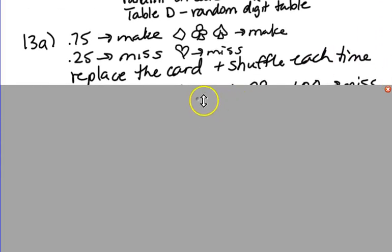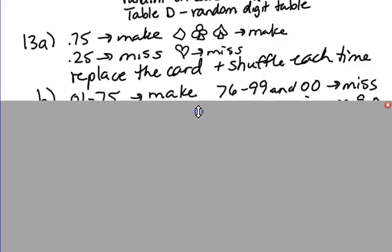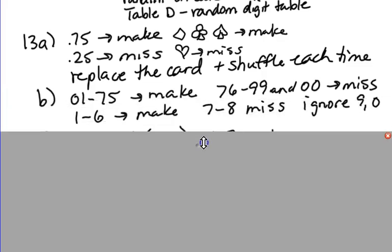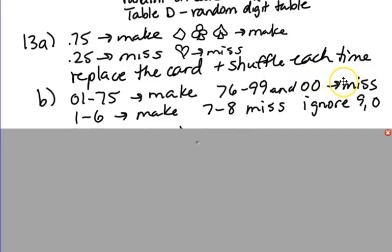The second one was using the table of random digits. So how would you use that? Well, in the table of random digits, there are just randomly generated digits from 0 through 9. You want to have 75% of the numbers represent making this free throw and 25% representing missing.